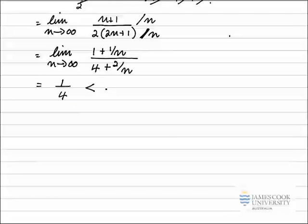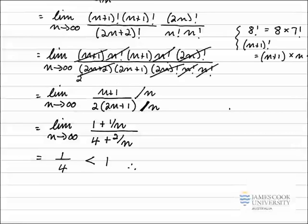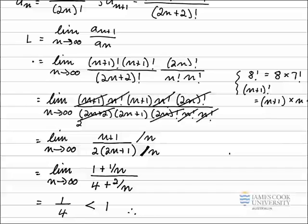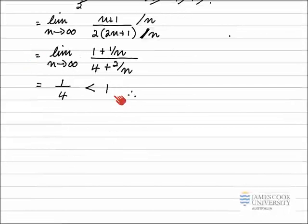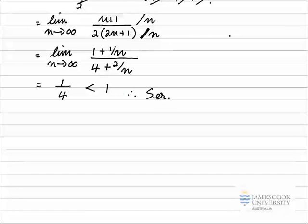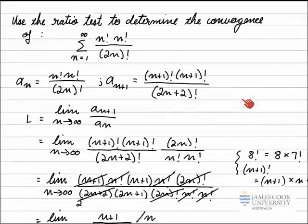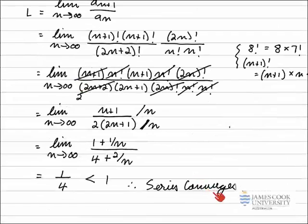L equals 1/4, which is less than 1. Remembering the ratio test: when the value of L is less than 1, the series converges. So we have shown that by the ratio test, this series converges.